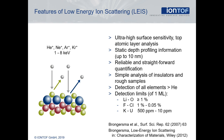The key features of LEIS are ultimate surface sensitivity and quantitative analysis. LEIS is well suited for many sample types including insulators and rough samples. Detection limits are generally better for heavier elements. However, it is important to note that the detection limits are given for a single monolayer. This means if an element is only present in the outer layer — for example a contamination — LEIS still sees it with full sensitivity. Other techniques average over some depth and therefore the signal of the contaminant is reduced by this averaging.